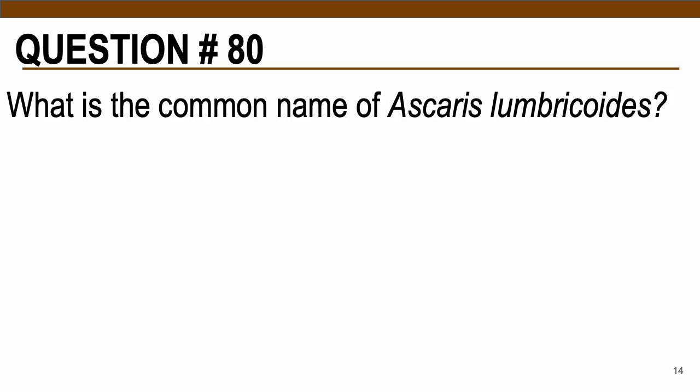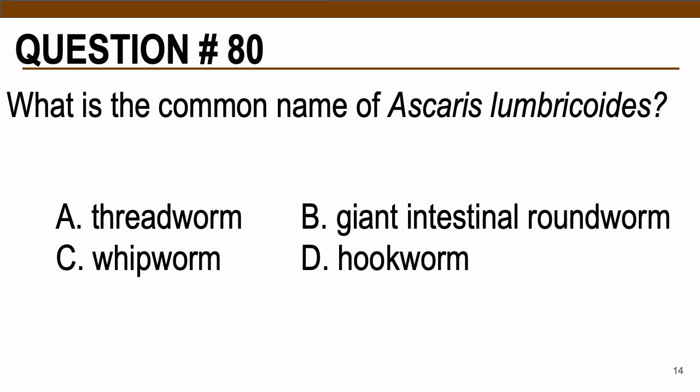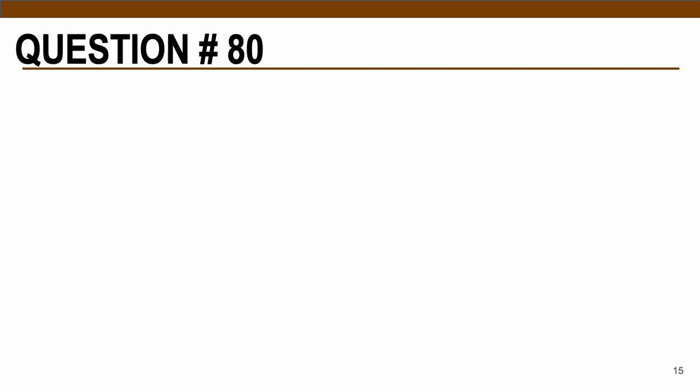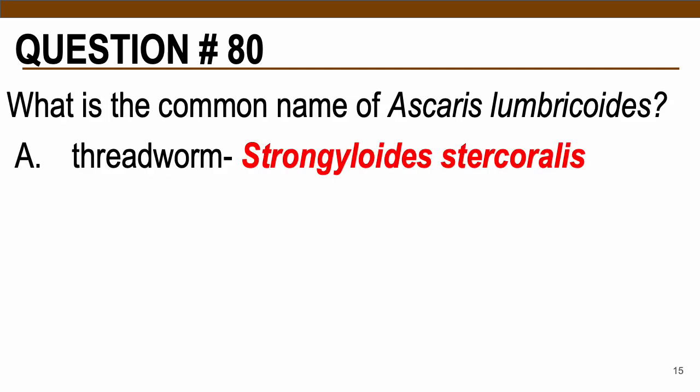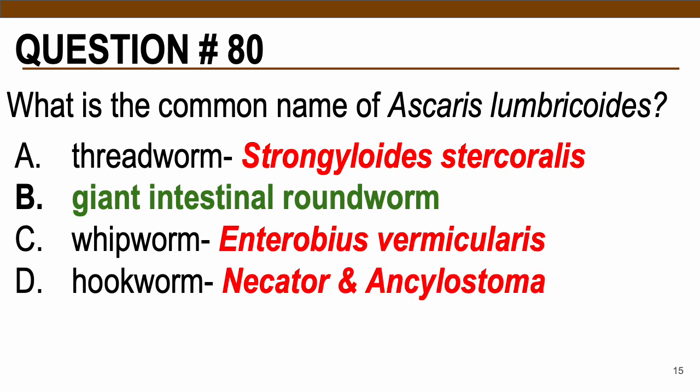Question number 80: What is the common name of Ascaris lumbricoides? Choices are A — threadworm, B — giant intestinal roundworm, C — whipworm, D — hookworm. The answer is letter B, giant intestinal roundworm. For the other choices: threadworm is for Strongyloides stercoralis; whipworm is for Enterobius vermicularis; and hookworms include Necator and Ancylostoma species.